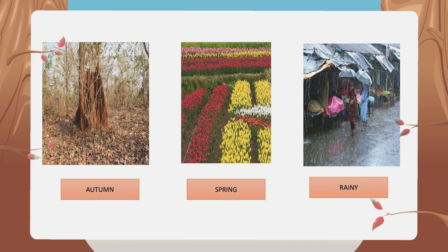Look at the pictures. The first picture is of the autumn season. The autumn season comes after the monsoon. The weather is neither hot nor cold. Many trees shed their leaves in this season.